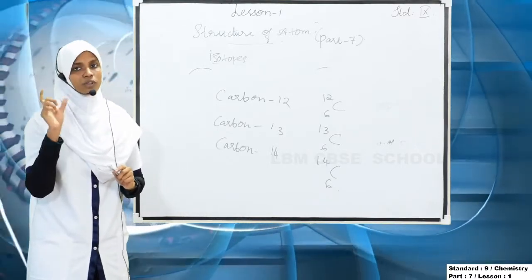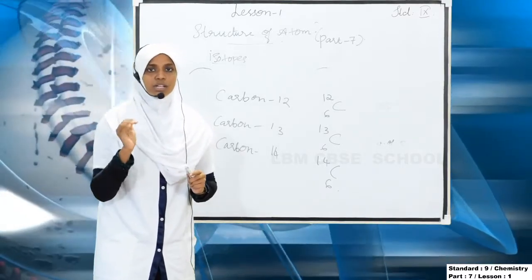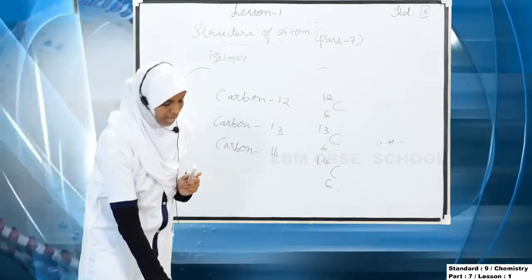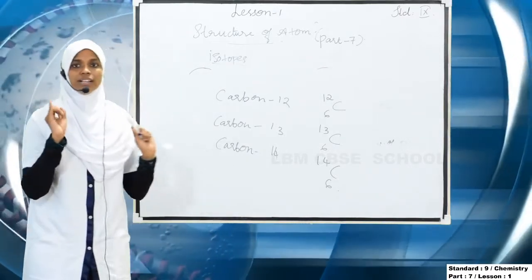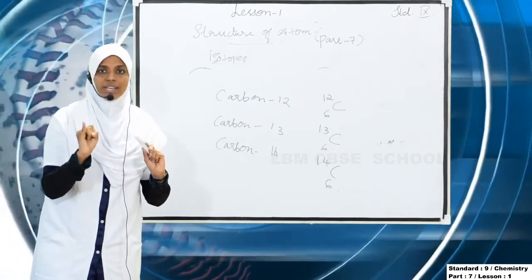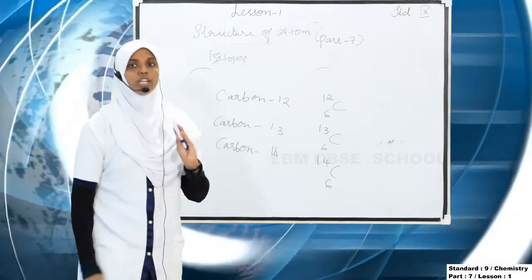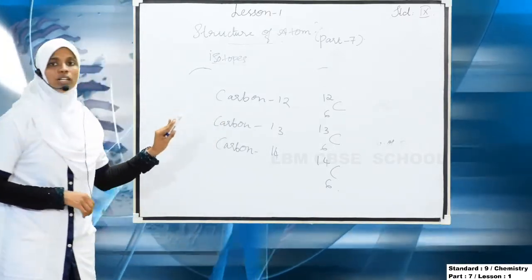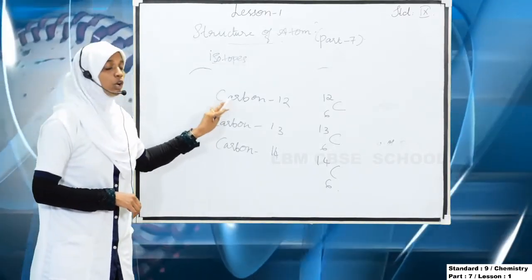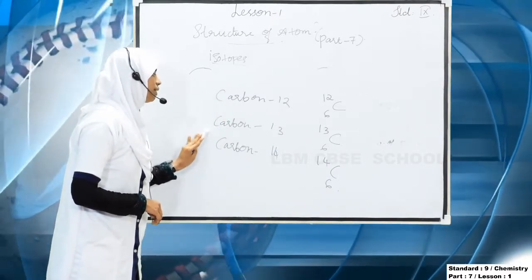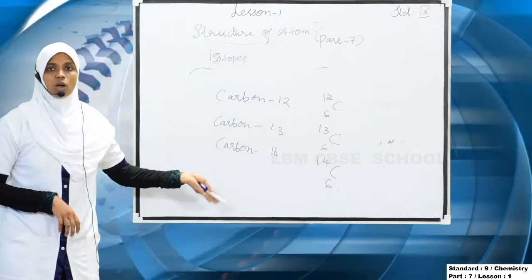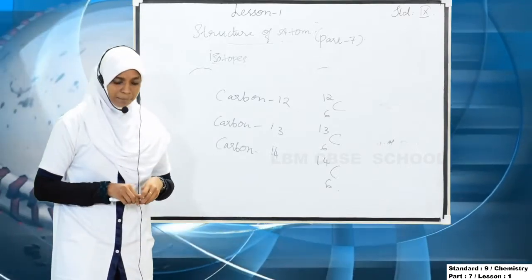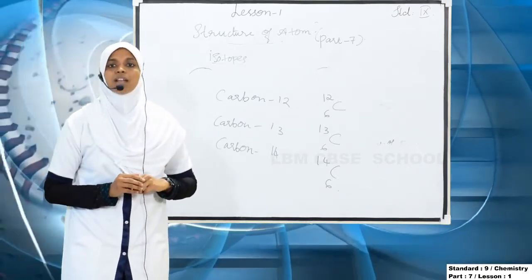So in the first section we learned about the isotopes of hydrogen — deuterium, tritium, and protium are the different isotopes of the hydrogen atom. And the isotopes of carbon are carbon-12, carbon-13, and carbon-14. Atoms of the same element having the same atomic number but different mass numbers are called isotopes.